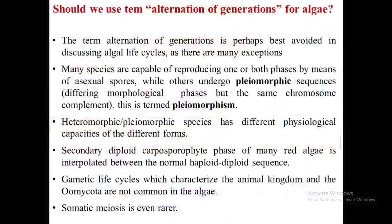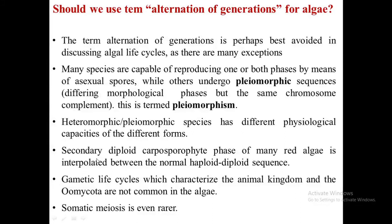Many phycologists believe the term 'alternation of generation' is perhaps best avoided when discussing the algal life cycle, as there are many exceptions to an obligate alternation — for example, many algal species are capable of reproducing one or both phases by means of asexual spores only, while others undergo pleomorphic sequences. Pleomorphic sequences are those where algae differ morphologically but have the same chromosome complement, a phenomenon known as pleomorphism. The evolutionary success of such heteromorphic or pleomorphic species has been attributed to the exploitation of different physiological capacities of different forms for better adaptation. It is also inappropriate to use this term for red algae members in which a secondary diploid carposporo-phytic phase is interpolated between the normal haploid-diploid sequence.